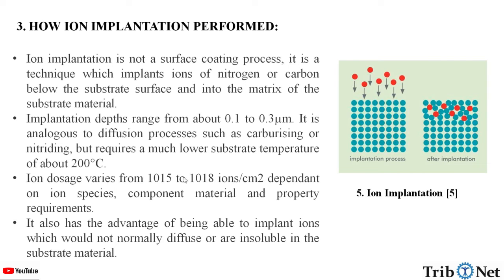Ion dosage varies from 10^15 to 10^18 ions per centimeter square, dependent on ion species, component material, and property requirements. It also has an advantage of being able to implant ions which would not normally diffuse or are insoluble in the substrate material. Here we can see how the implantation process takes place — before and after implantation.